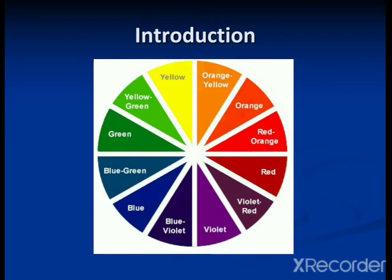If you see the complementary color wheel, you will see that there are different types of colors in the visible range. In the electromagnetic spectrum, we know that violet, indigo, blue, yellow, orange, green, and red are the various colors. This wheel shows the complementary color — meaning if any species absorbs green color, it will reflect or show red color. Or if any species absorbs yellow color, it will transmit violet color. This is the basic knowledge behind the complementary color wheel.